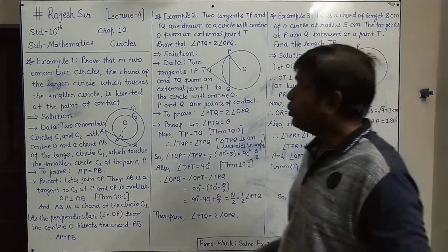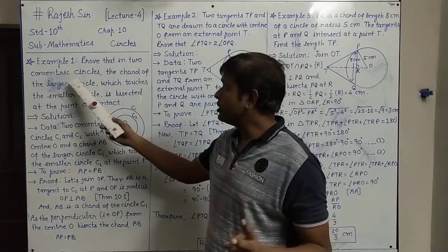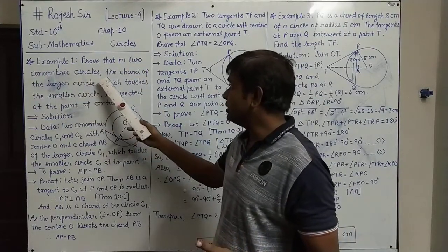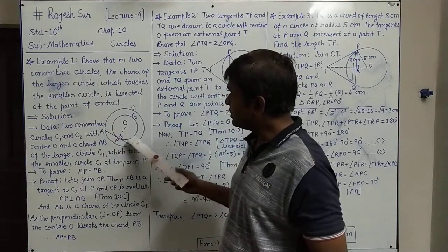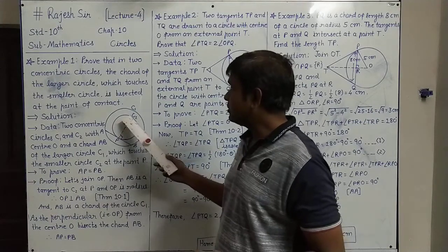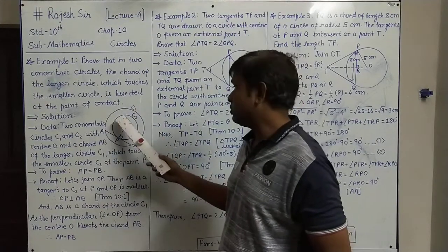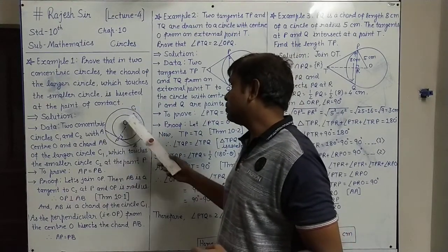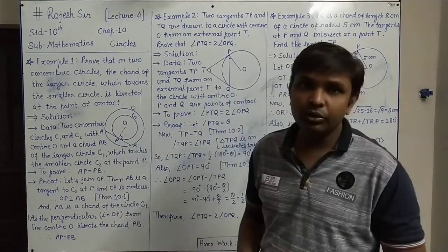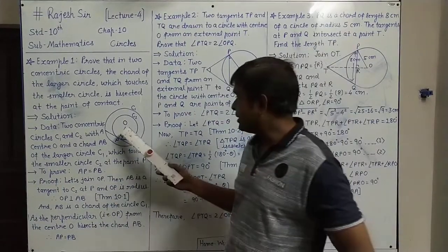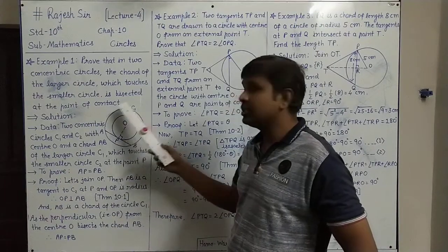Example 1: Prove that in two concentric circles — the bigger circle is C1 and the smaller circle is C2. Two concentric circles means the center will be the same, so center O is the same for both circles.